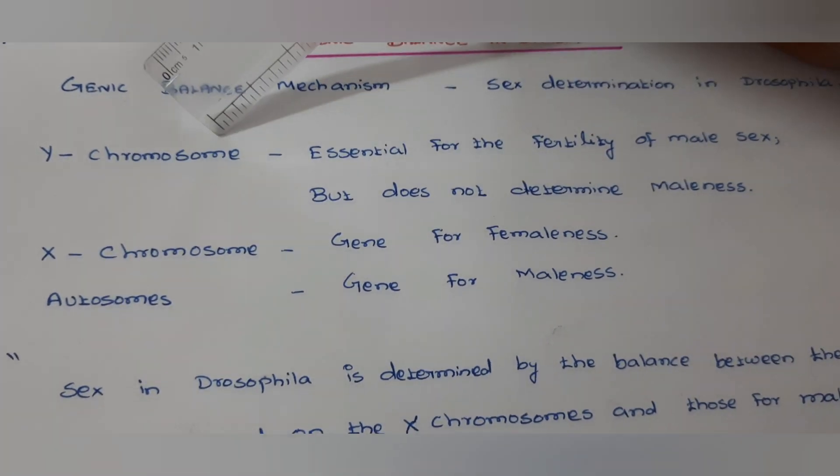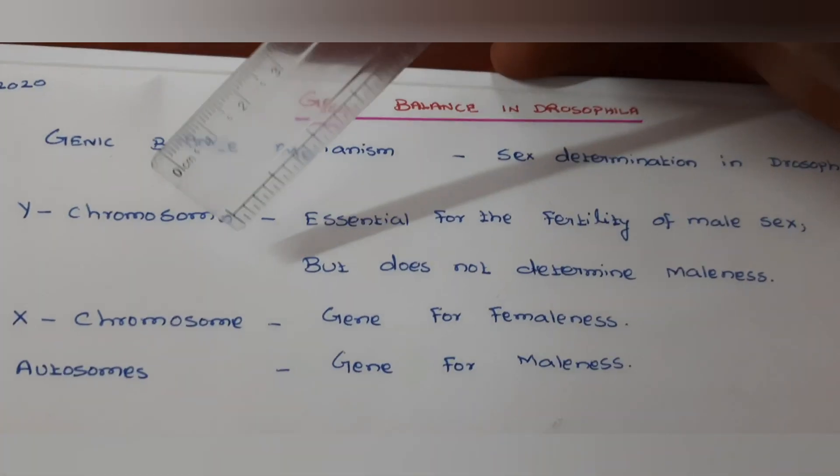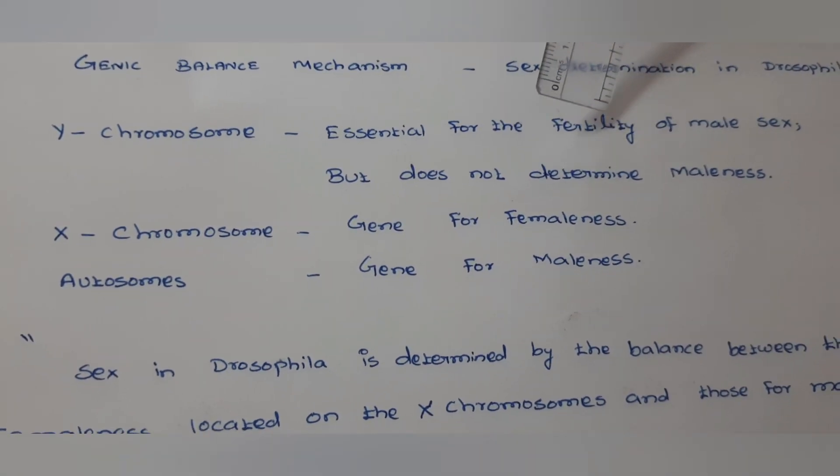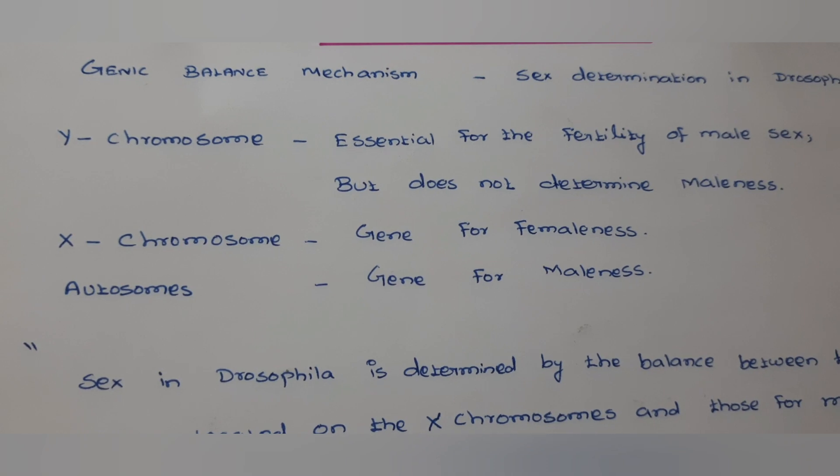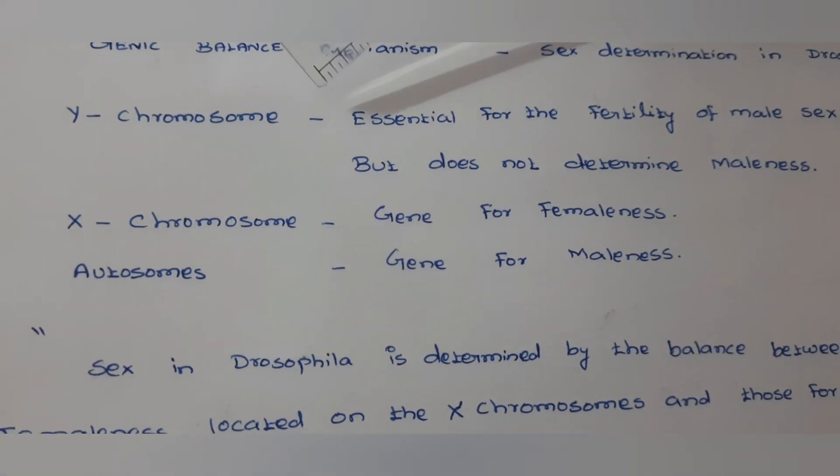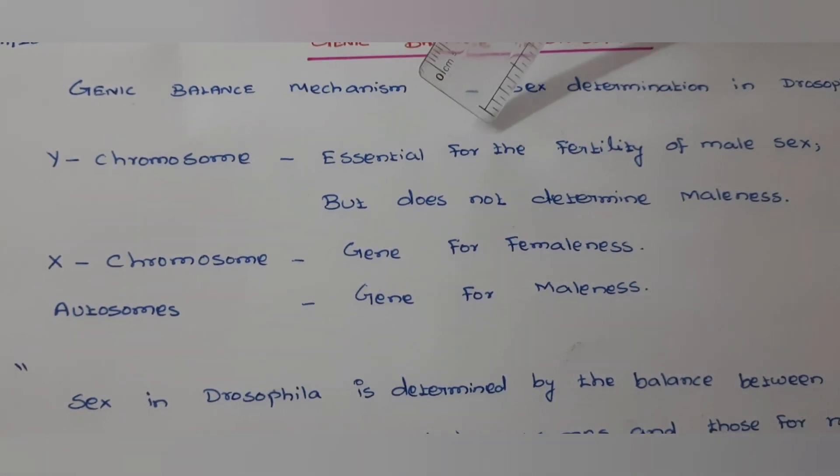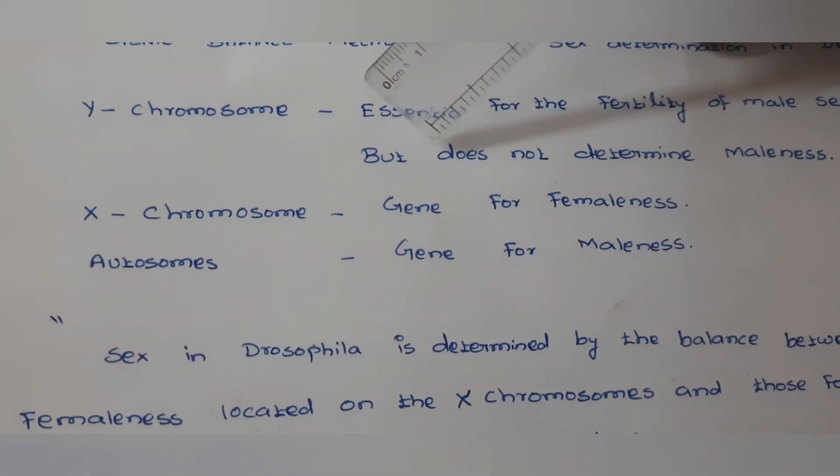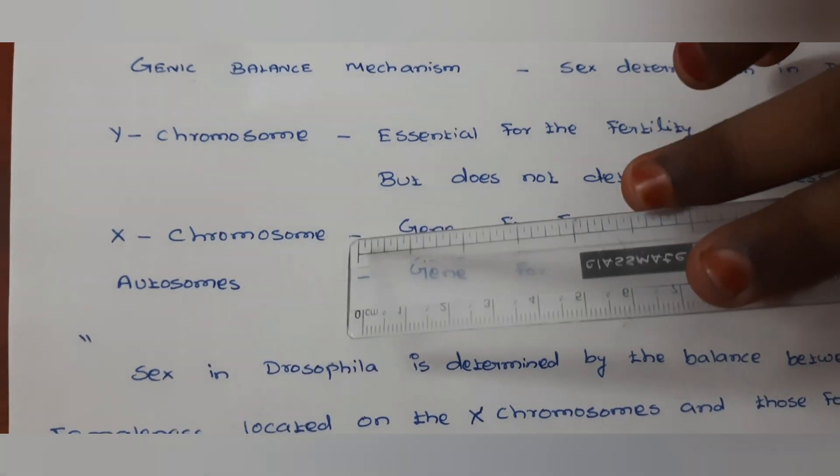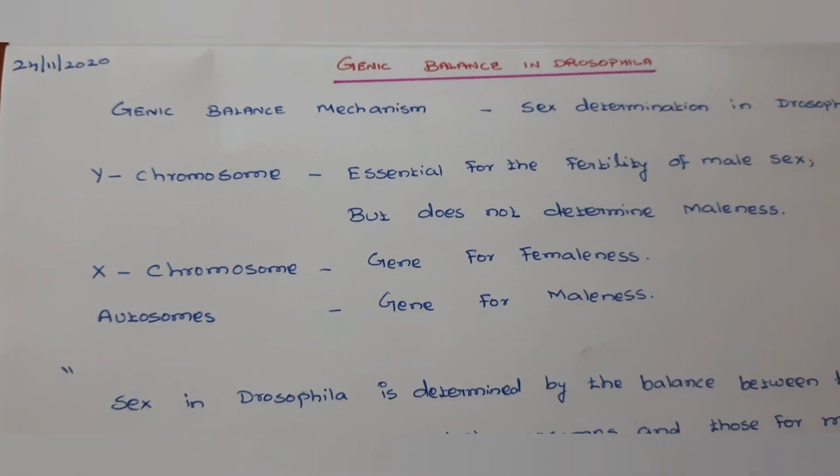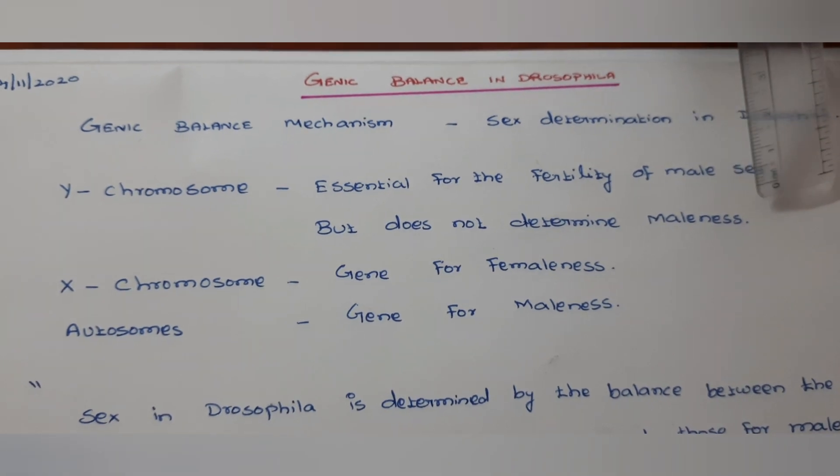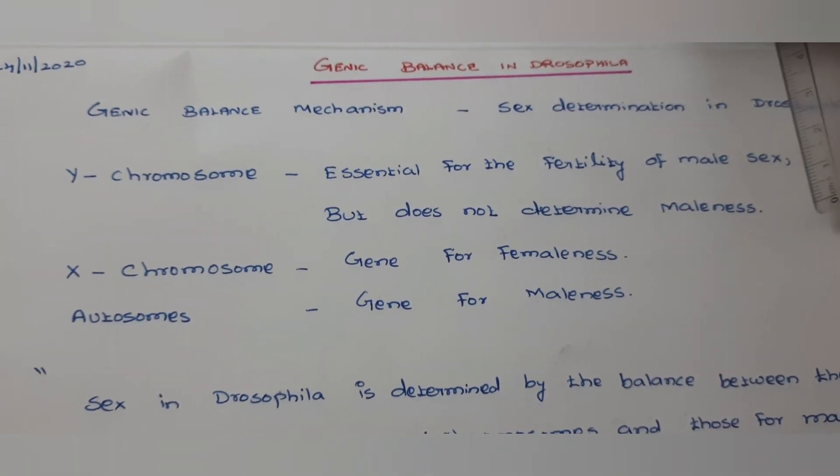First, Y chromosome. As you already know, Y chromosome is essential for the fertility of male sex. That means it only determines the sex, male sex or maleness. But the characteristic maleness it never determines. So it does not determine the maleness, that means the characteristics of male.